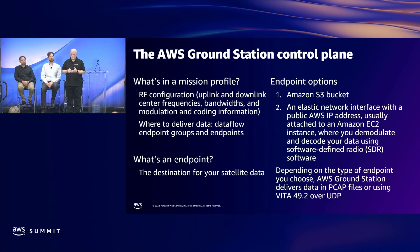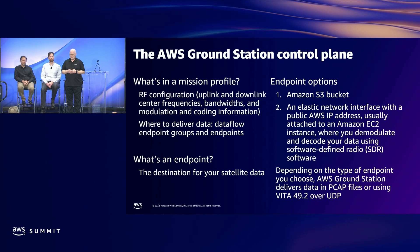A mission profile is the core of the AWS Ground Station configuration. It defines the RF parameters of the satellite and where we should deliver the data that you downlink. If you're doing uplink telecommand and control (TT&C), the mission profile also defines the uplink parameters — note that licensing and onboarding for uplink is separate from downlink. You need to specify an endpoint in your mission profile, and that endpoint defines where the data is delivered for a particular contact — either an S3 bucket or a network interface connected to an instance running a software-defined radio.